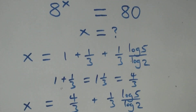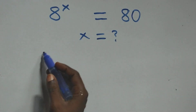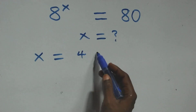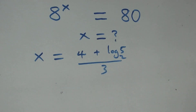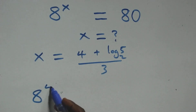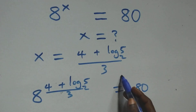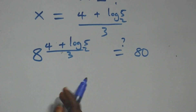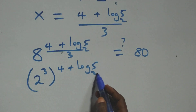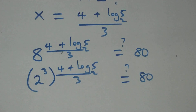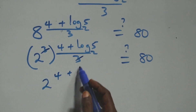Let's verify this answer. We substitute x = (4 + log₂5)/3 back into the original equation: 8^((4 + log₂5)/3) = 80. We rewrite 8 as 2³, so (2³)^((4 + log₂5)/3) = 80. The 3s cancel, giving 2^(4 + log₂5) = 80.